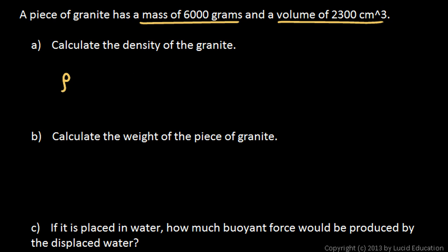Okay, that's pretty easy. Density is just mass divided by volume. And we're given both of those numbers. The mass is 6,000 grams and the volume is 2,300 cubic centimeters. So we just pull out the calculator and divide that. 6,000 divided by 2,300 comes out to 2.6. And you can see the units right there, grams per cubic centimeter.